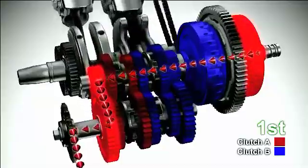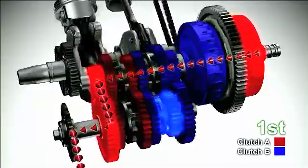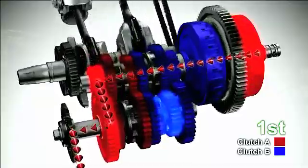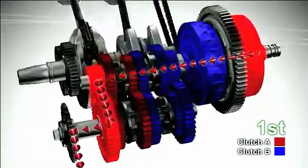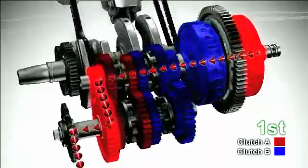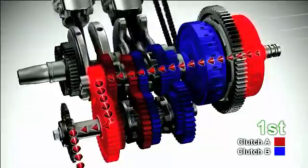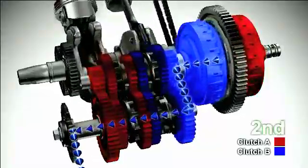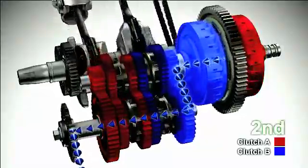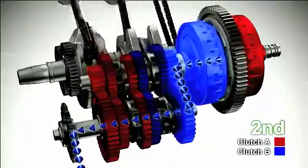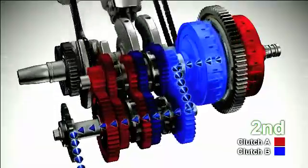Now it's time to shift up to 2nd gear. Clutch B starts engaging and gears are shifted from neutral to the 2nd position. At the same time, clutch A is disengaged and its associated gears are put into neutral. This completes gear shifting from 1st to 2nd gear.